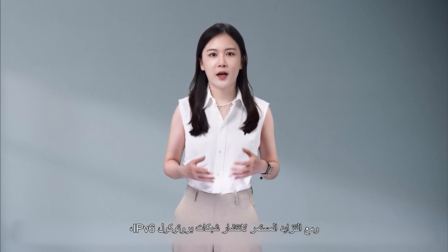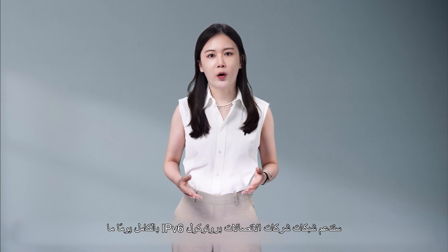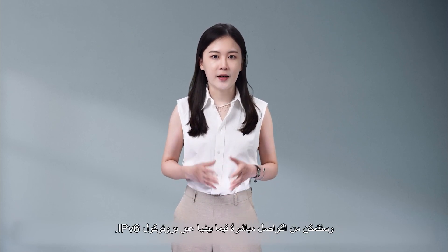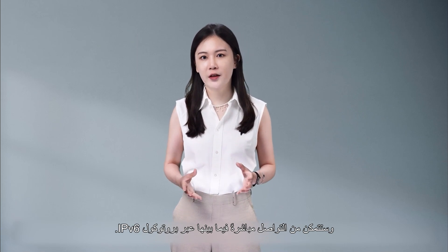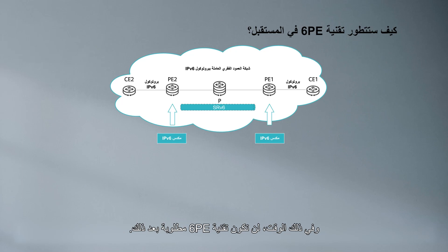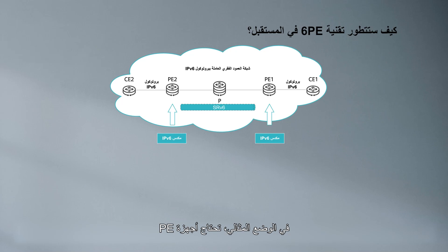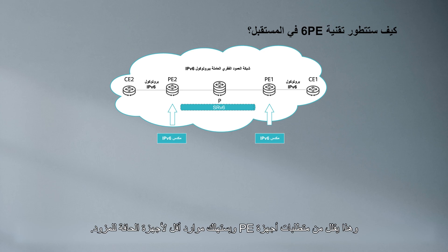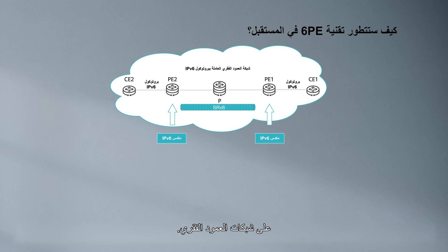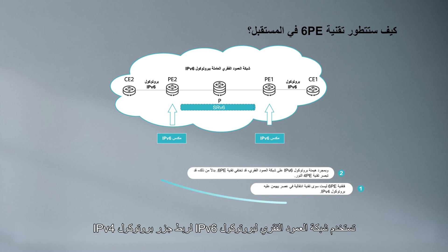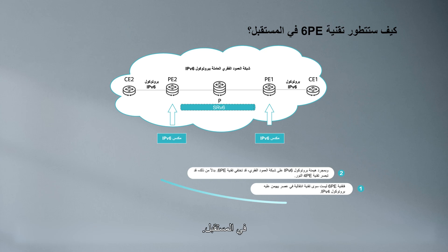As IPv6 networks become more and more popular, carrier networks will one day fully support IPv6 and be able to directly communicate with each other through IPv6. At that time, 6PE will no longer be required. The ideal situation is that PEs only need to support the IPv6 stack, which lowers requirements on PEs and consumes less PE resources. 6PE will disappear once IPv6 becomes prevalent on backbone networks. However, transition technologies such as 4PE, which use the IPv6 backbone network to connect IPv4 islands, may emerge in the future.